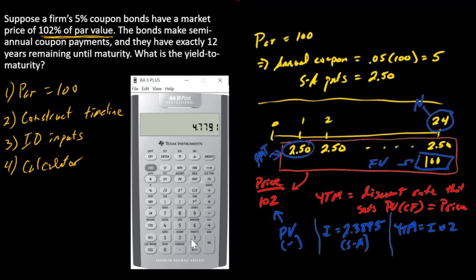So yield to maturity, reported as the answer, would be 4.7791 percent.